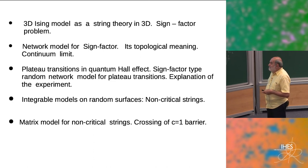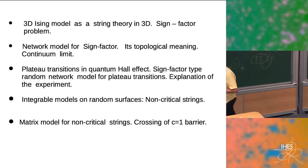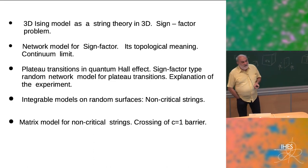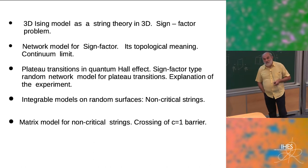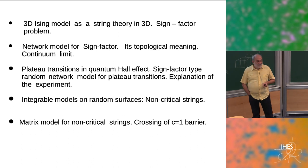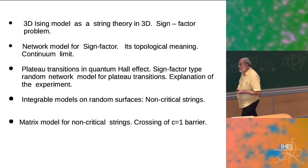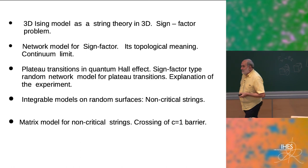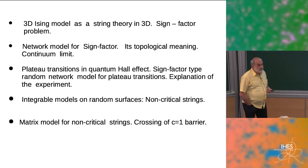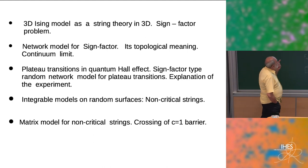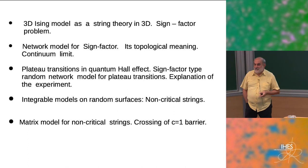Then I will jump to another problem which looks very far from the Ising model: the plateau transition in the quantum Hall effect. But it turns out it's not really very far, because the model under discussion to describe these plateau transitions appears to be the same model I will show as the sign factor in the 3D Ising model.